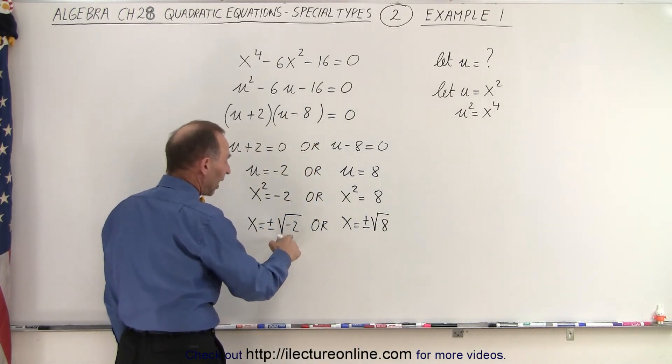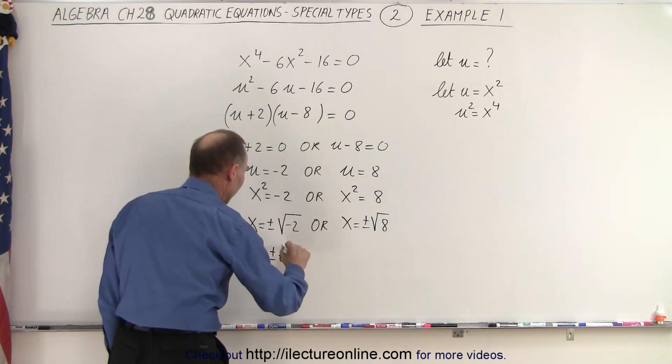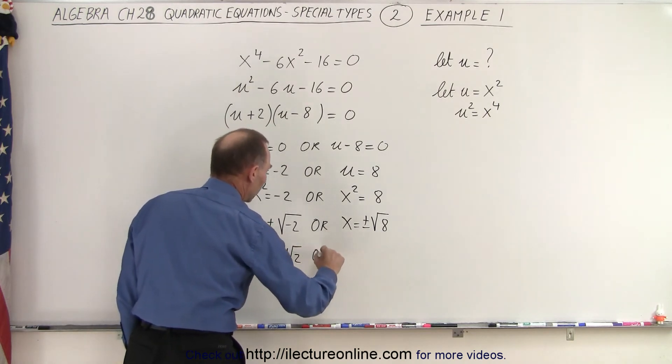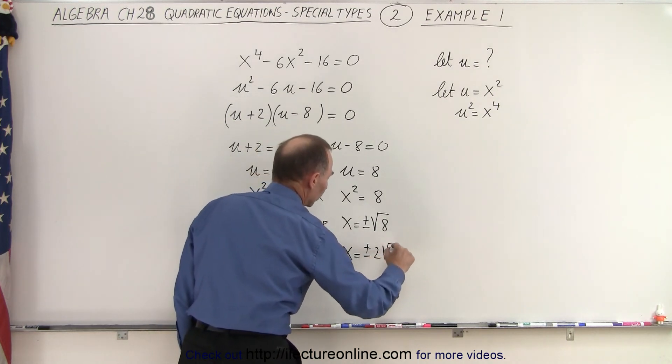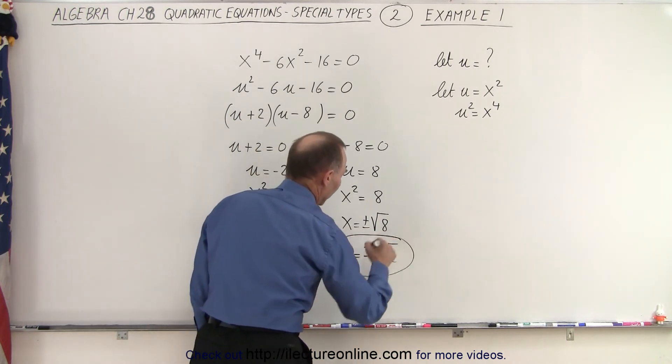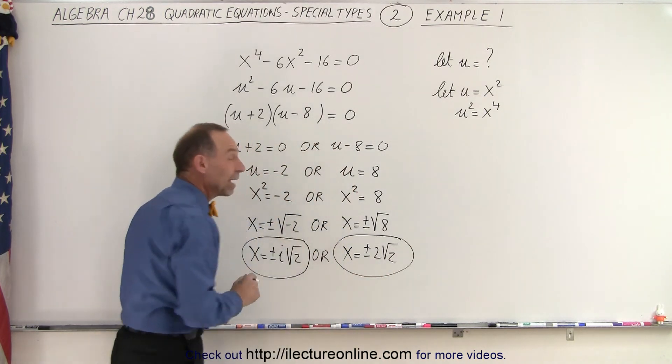Here, the square root of negative 1 is i. So this can be written as x is equal to plus or minus i times the square root of 2. Or, in this case, we can say that x is equal to plus or minus 2 times the square root of 2. Notice, I have two real solutions and I have two imaginary solutions.